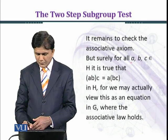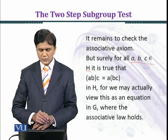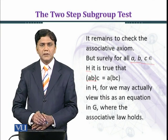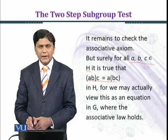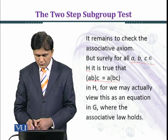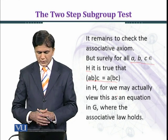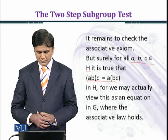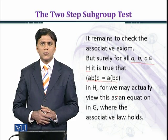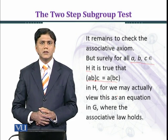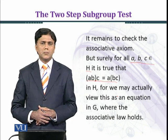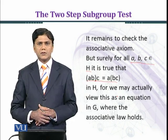It remains to check the associative axiom. For every a, b, c belonging to H, it is true that (a star b) star c equals a star (b star c) in H, because we may view this as an equation in G — the associative property holds in G and therefore also holds for all elements of H. Hence we have proved that H is a subgroup of G and established the result.